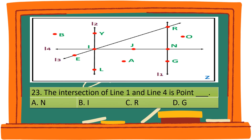Question 23. The intersection of line 1 and line 4 is point blank. A. N. B. I. C. R. D. G. The correct answer is A. N.